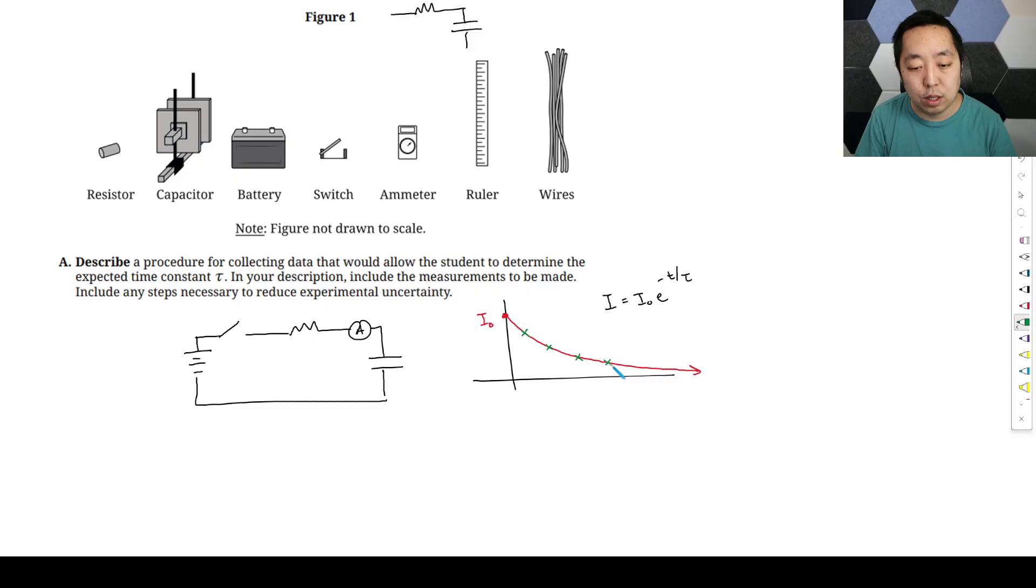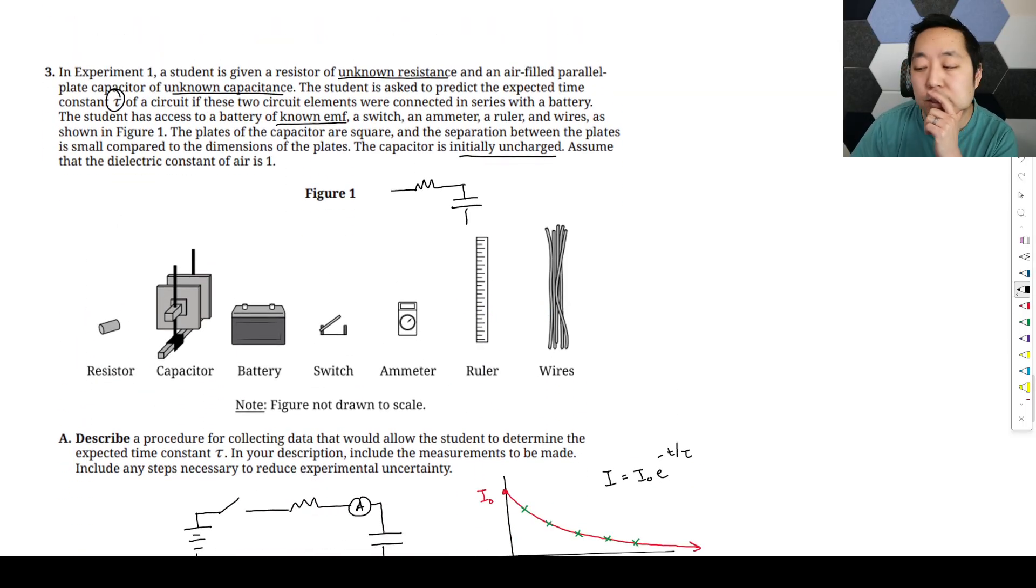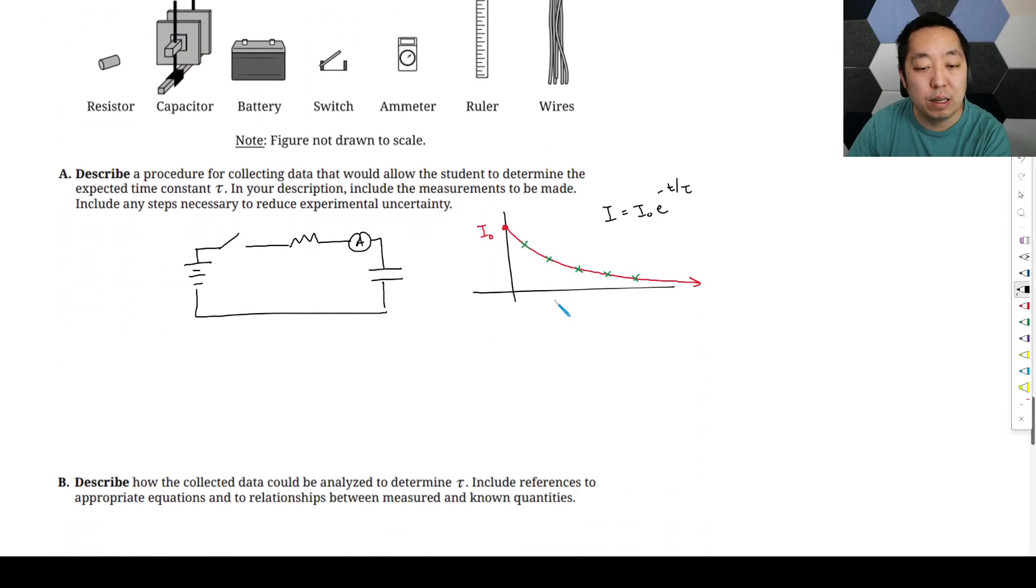So this is going to be the I, and so your expression for I, the current, is going to be some initial current e to the negative t over the time constant. So at time zero, this will be I zero. We call this I zero here. And then eventually it will decay all the way down to zero. That will be our general expression. And so then we want to look at that equation and linearize it. So this is kind of the setup. From this equation, you can try to figure out. So the first part is just to describe what we're going to do, what data we're going to collect. And we're literally just going to collect the current readings over time.